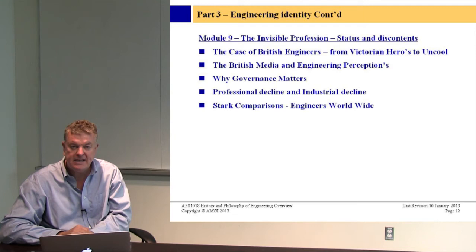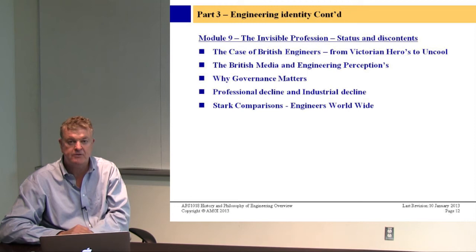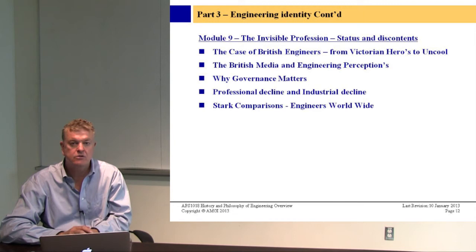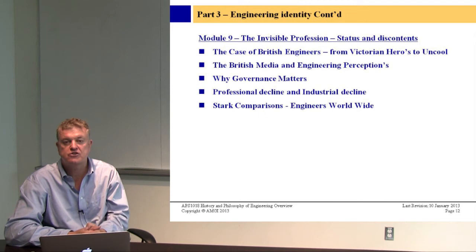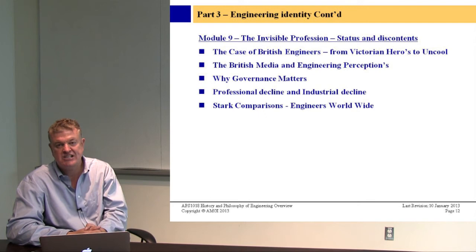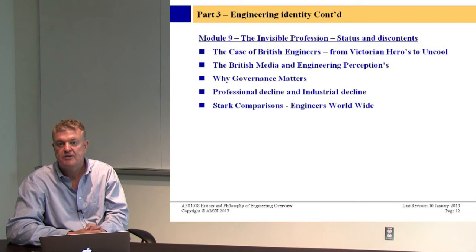We'll be looking at many Royal Academy papers and academic papers from various institutions gathered over the last 30 years. We're going to question: all this stuff has been studied to death, so why has nothing been done? Why have changes not been made? Why have academics and researchers highlighted the problems of the image of engineers — the discontents, the status — and yet nothing has improved?